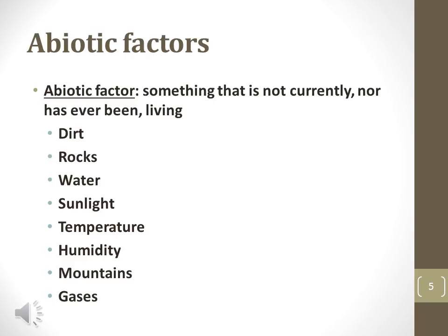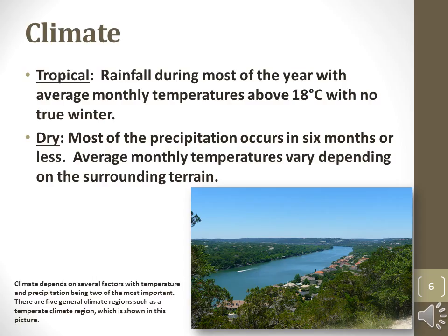Dirt, rocks, water, sunlight, and atmospheric gas are all examples of abiotic factors that affect organisms. Climate refers to the long-term averages of different abiotic factors in a particular ecosystem.